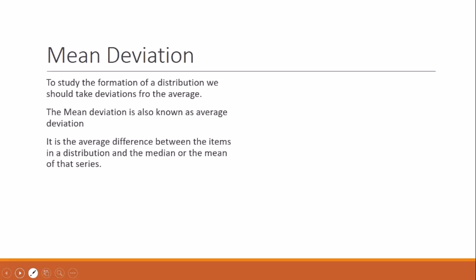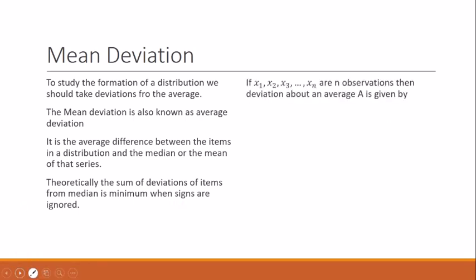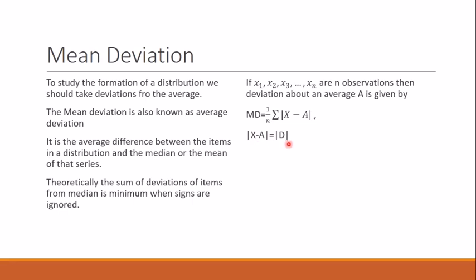Theoretically, the sum of deviations of items from the median is minimum when signs are ignored. If x1, x2, ..., xn are n observations, then mean deviation about average A is given by: MD = (1/n) × Σ|x − A|. Here |x − A| is also written as |d|, where d = x − A.